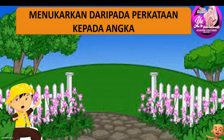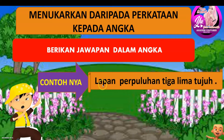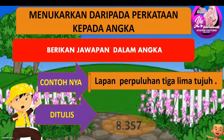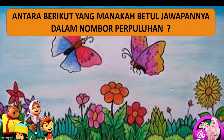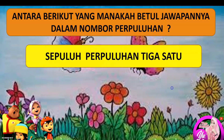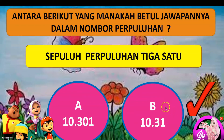Seterusnya, menukarkan daripada perkataan kepada angka. Ingat ya adik-adik, berikan jawapan dalam angka. Kita pindahkan daripada perkataan kepada angka. Jadi, lapan perpuluhan tiga lima tujuh — kita tulis lapan, kemudian letak titik, tiga lima tujuh. Contoh seterusnya: sepuluh perpuluhan tiga satu — jawapan dia adalah B, sepuluh perpuluhan tiga satu.